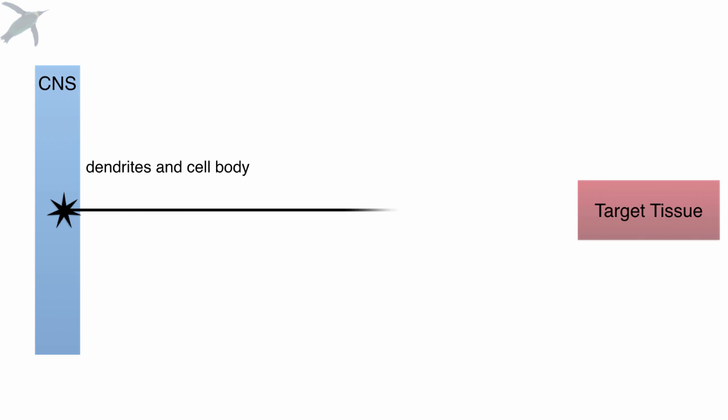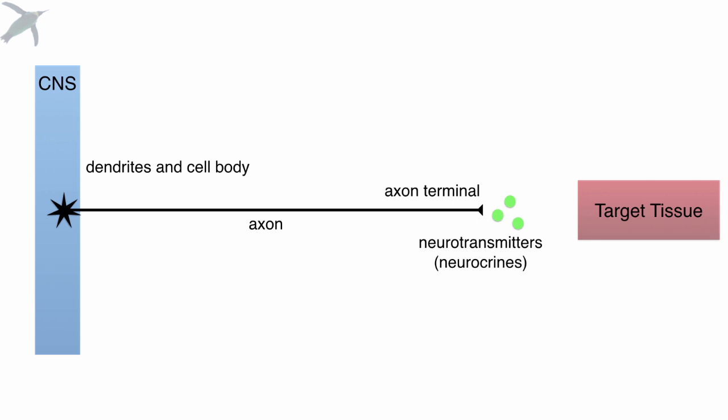So the players in this story — the parts, if you will — we've got dendrites and cell bodies, and then emanating from those we have axons. At the end of the axon we have the axon terminal. The axon terminal releases molecules; we refer to these as neurocrines. Most commonly they are neurotransmitters, but neurocrine is a more general term and will also include things like neurohormones, which are released into the blood. These molecules will be received by receptors on target tissues. The transmission of a signal across a space like this, whether it's a synapse or through the blood, we refer to that as signal transduction.